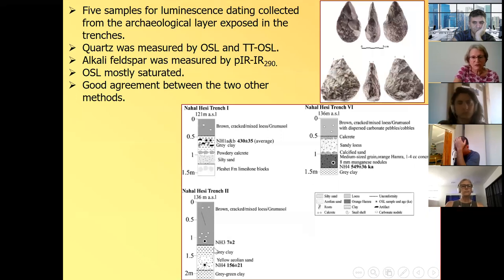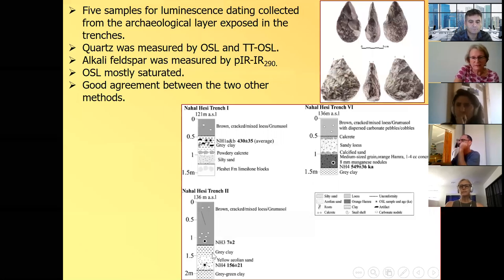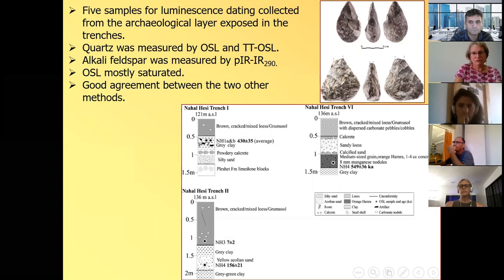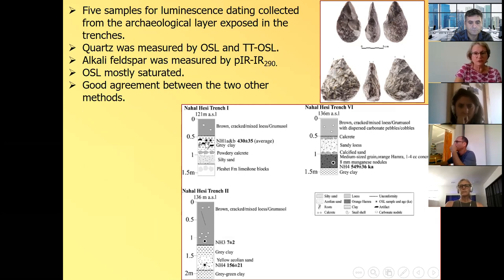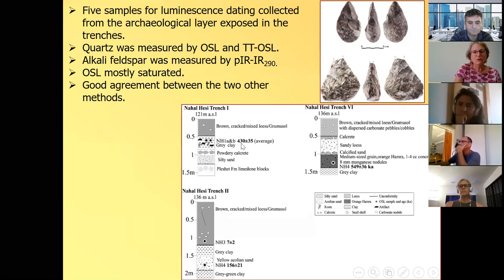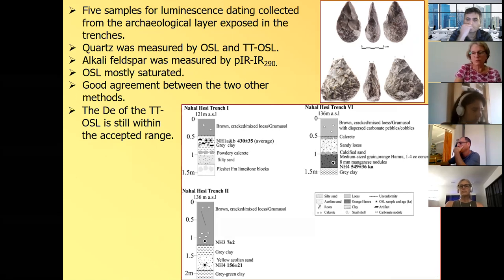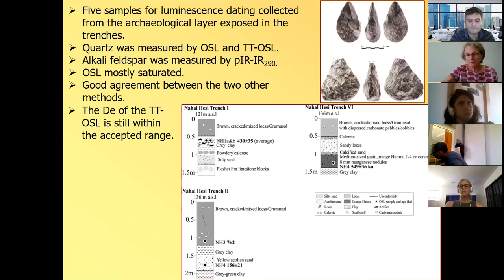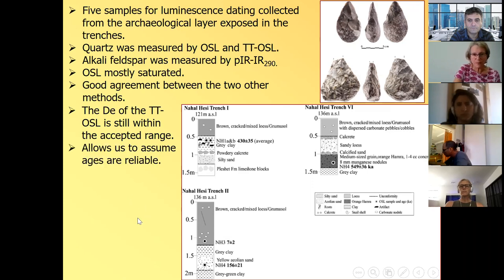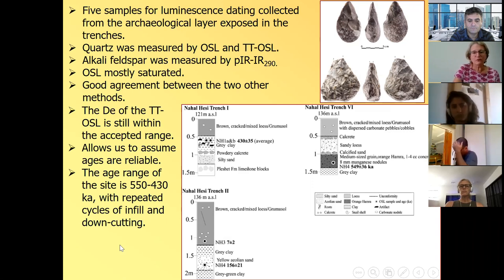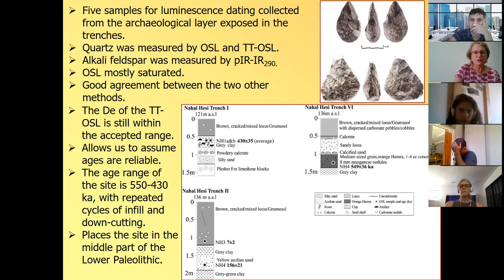And the OSL is mostly saturated, as you expect, for such old site with Acheulean industry. But there is a good agreement between the two other signals, the TTOSL and the post IR 290. And here are the sections from the trenches. So let's start with this one. This one has younger sediment. The top is a kind of a loess, it gave us 7,000 years. And slightly deeper, we got 156,000 by OSL, so it's not very old. But the samples from the archaeological layers are reasonably old. Here we took two samples and we measured two samples with two signals. So we had four ages and we averaged them. They were all very similar, 430,000 years. And in the second trench, we got even an older age, 550,000 years. And the DE of the TTOSL is still within the acceptable range. It doesn't go beyond 400, 450 gray. So we think the ages are acceptable, especially the good agreement with the post IR IR.